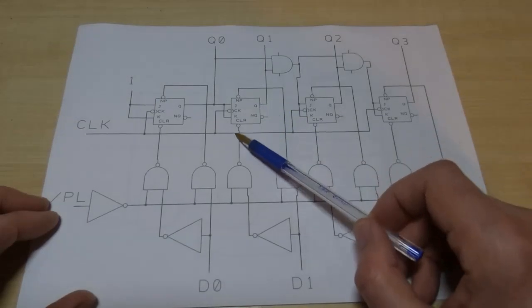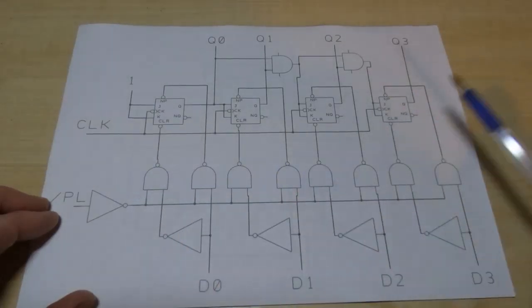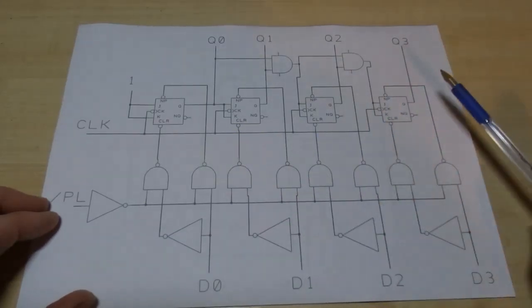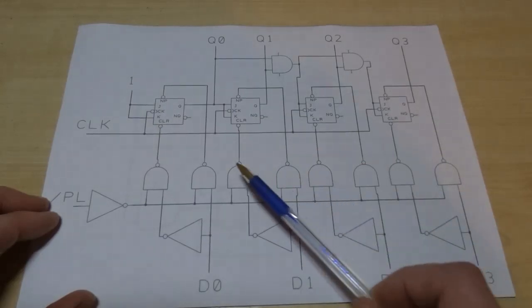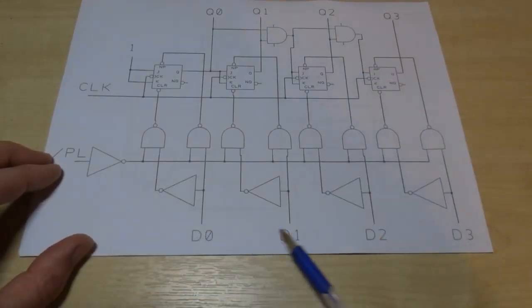All you need to do is make sure you have the right zero or one on the clear and the preset when you next have a clock pulse and that way it will load the correct value into the counter or at least into each bit of the counter.